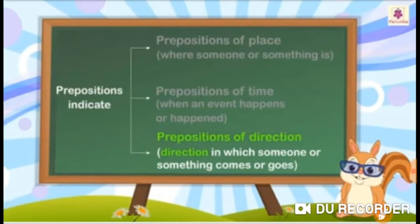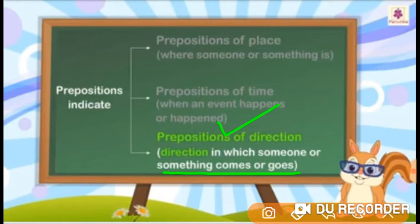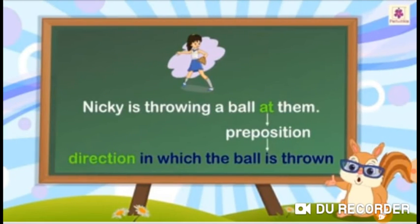Prepositions also indicate direction in which someone or something comes or goes. Such prepositions are called prepositions of direction. For example, Nicky is throwing a ball at them. Here, the preposition at indicates the direction in which the ball is thrown.